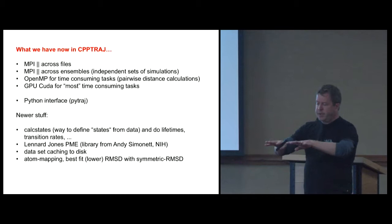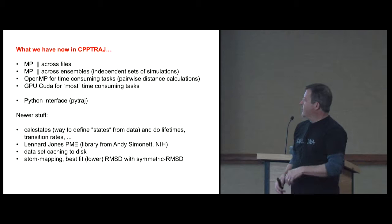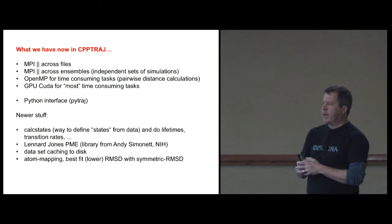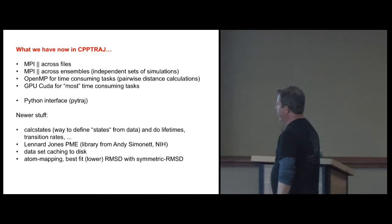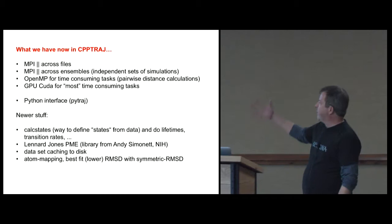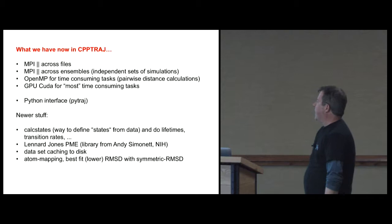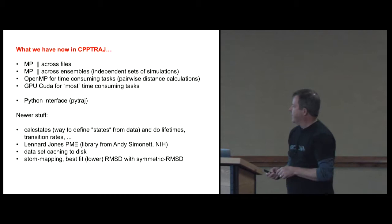To do this work, when we were doing the replica exchange runs, we would run like up to hundreds of independent MD simulations that were exchanging information. And when we started to analyze these on the Lustre system, we were doing it from a single node and it kind of just took out the Lustre file system. And they weren't very happy about that. So we had to parallelize the code so we could do an ensemble per node effectively. So we have parallelization across files, across ensembles, across OpenMP and others. There's a Python interface to CPPTRAJ. It's a nice program to do these things. Some new features.